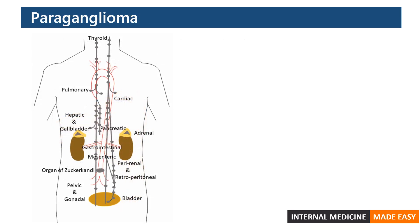Paragangliomas are neuroendocrine neoplasms derived from paraganglia of the sympathetic and parasympathetic nervous systems. They can arise in any location where paraganglia normally reside. This figure illustrates the location of normal paraganglia in the neck, thorax, and abdomen.